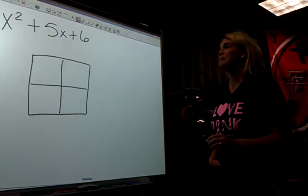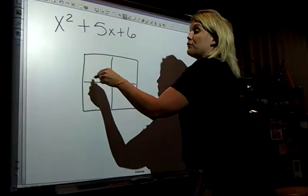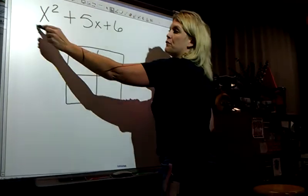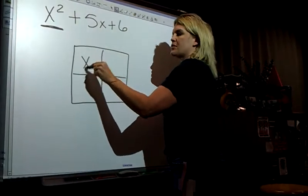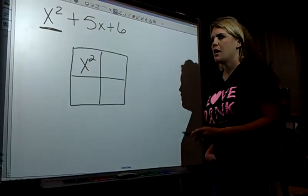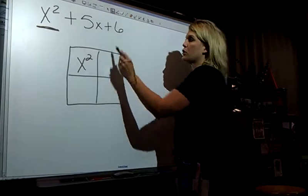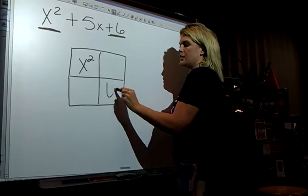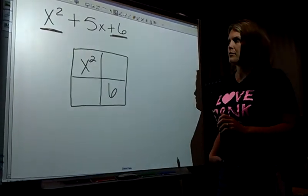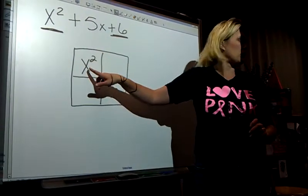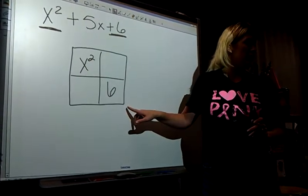That was Eric Thomas who wanted to be in the video. Okay, the very top corner, you're going to put the first term, you're going to put your x squared. The very bottom down here, you're going to put your last term, a 6. The first one always goes up here, the last one always goes at the bottom right.